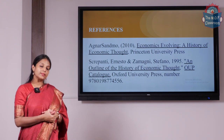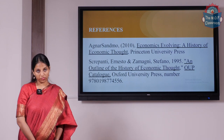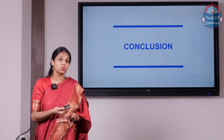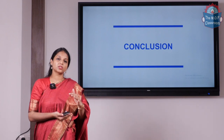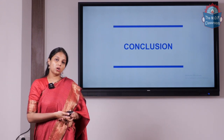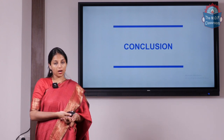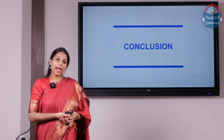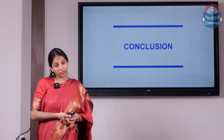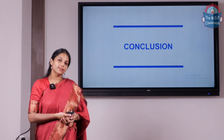For further reading, you can check out Ernesto Screpanti and Stefano Zamagni's concise book of all these ideas, and also Economics Evolving: A History of Economic Thought, which gives a very elaborate understanding of the classical school of thought. To sum up, we've discussed only a few ideas — the other economists who contributed to the school include David Ricardo, Thomas Robert Malthus, and J.S. Mill. But Adam Smith laid the foundation: the concept of free market, laissez-faire economy, invisible hand, and self-interest — these are the key ideas of the classical school of thought. Thank you.